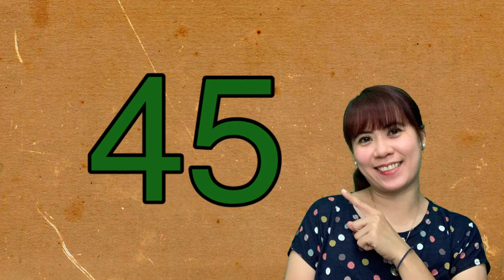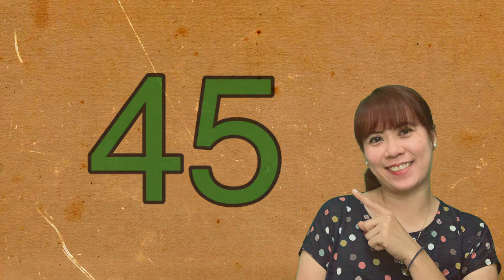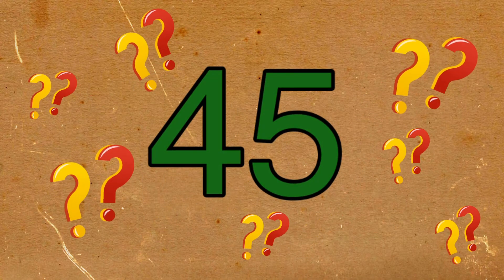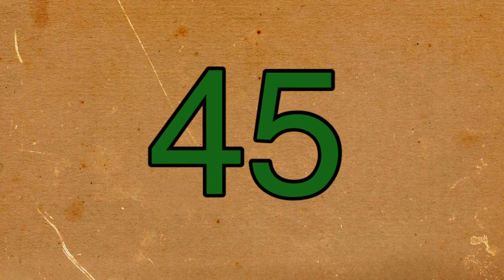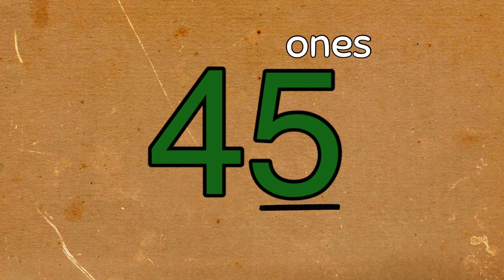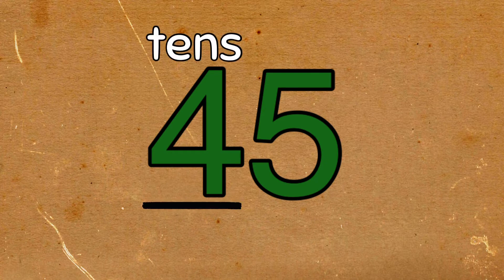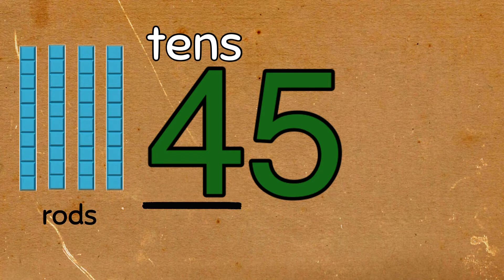Let's look at this number, number 45. Can you tell me which digit is in the ones place and which digit is in the tens place? Number 5 is in the ones place. It is represented by showing five units. On the other hand, digit 4 is in the tens place. It is represented by four rods.